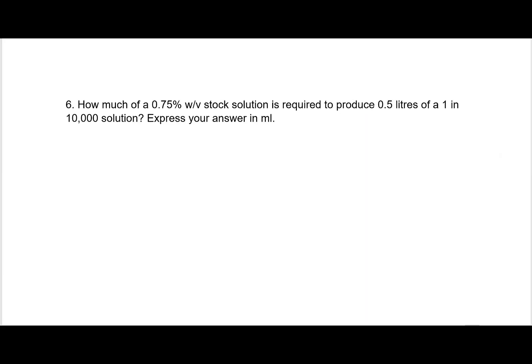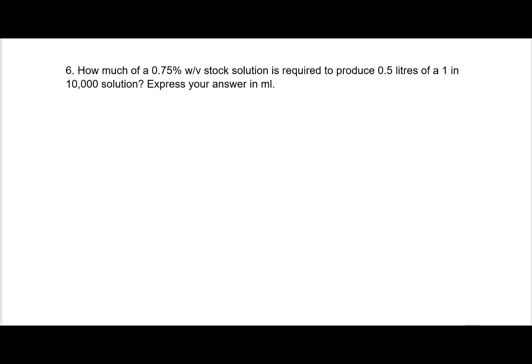Question six: how much of a 0.75% w/v stock solution is required to produce 0.5 liters of a 1 in 10,000 solution? Starting from the end, I have to make 0.5 liters of 1 in 10,000, starting with 0.75%. Can I use C1V1 = C2V2? Yes — but I need to make sure the units are the same on both sides first.